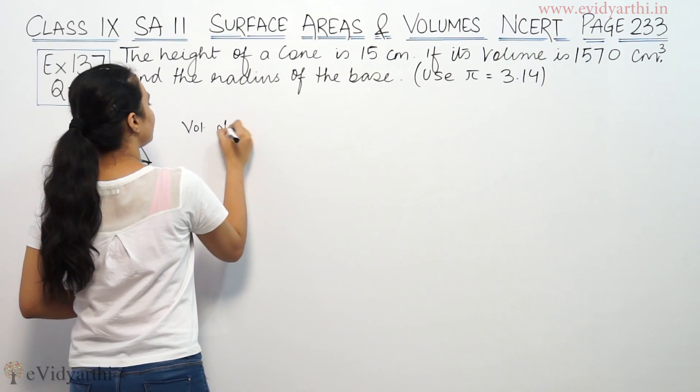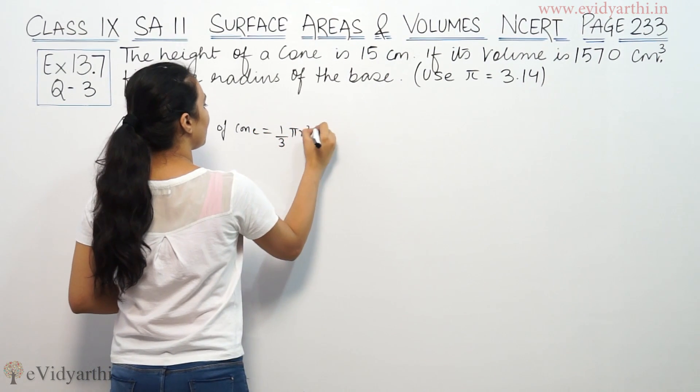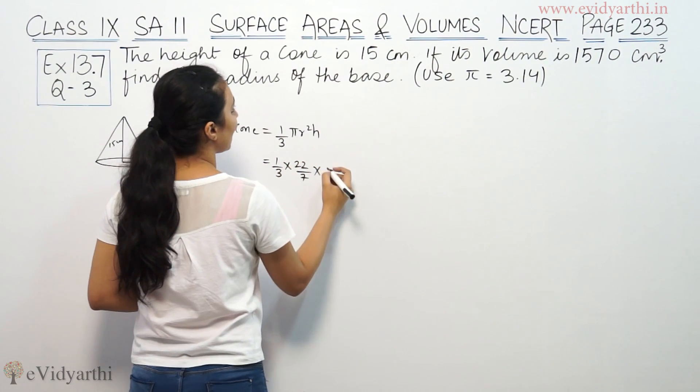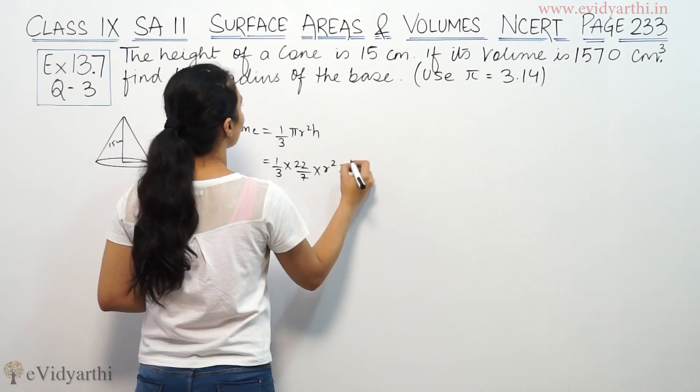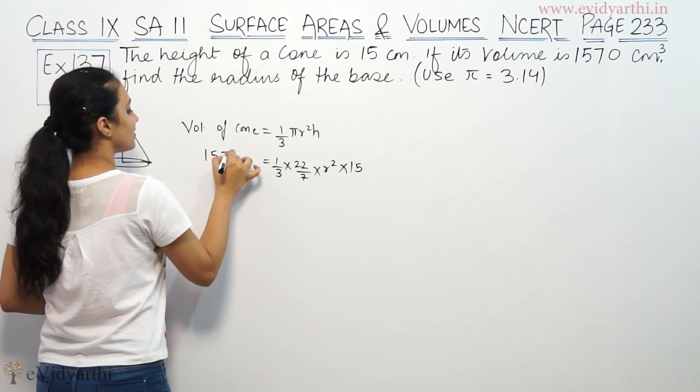So volume of cone will be equal to 1/3 πr²h. So 1/3 into 22/7 into r² into height 15, and volume is 1570.